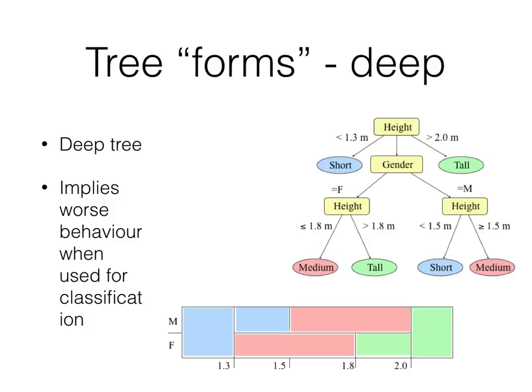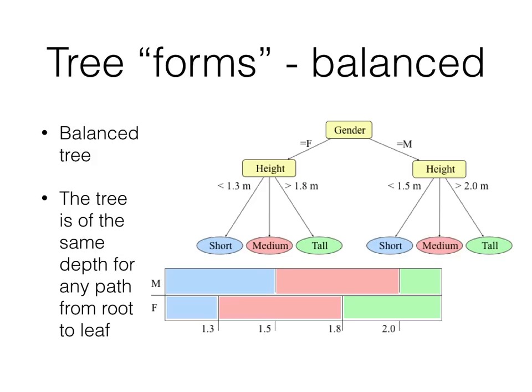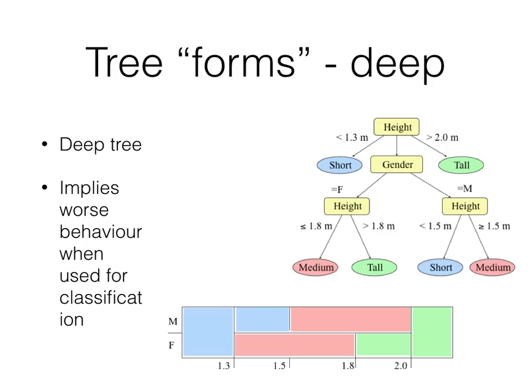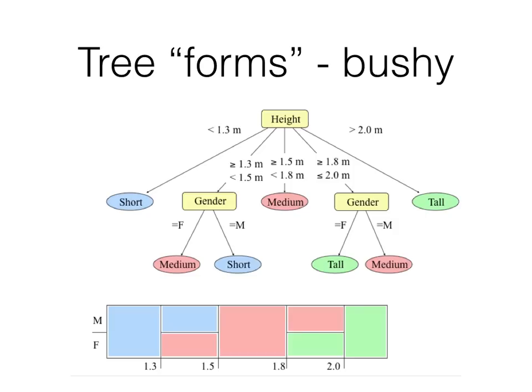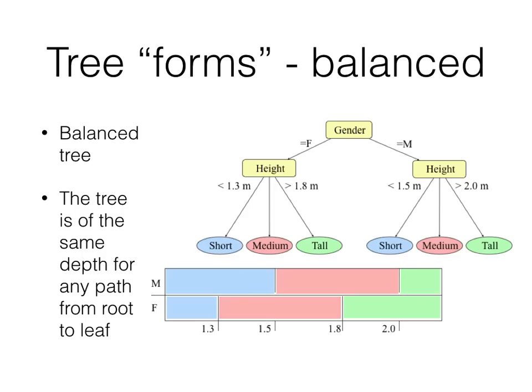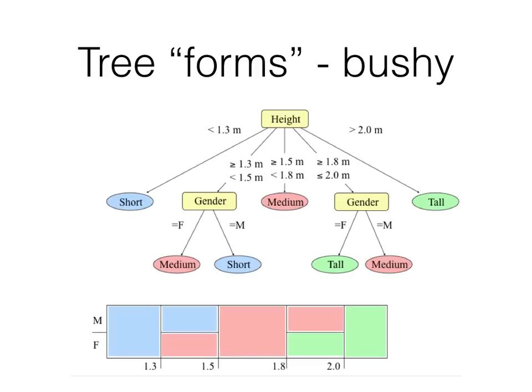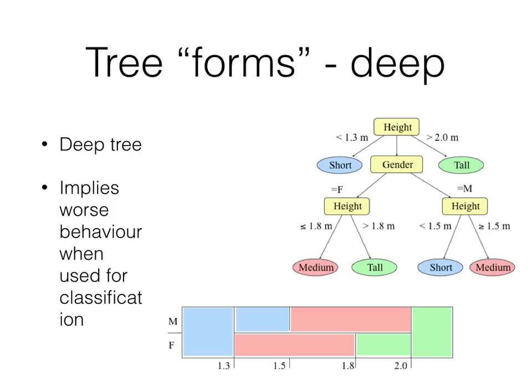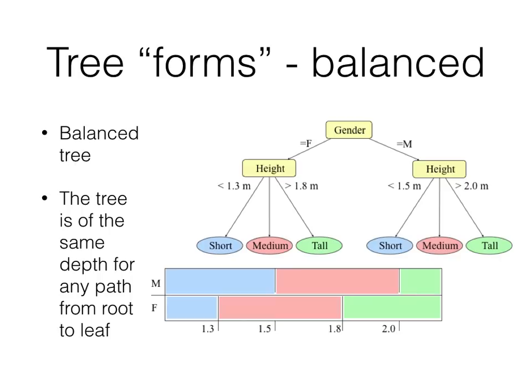This shows the difference between a balanced tree, a deep tree where one area is deeper than the other, and a bushy tree where it's very wide. You can see the different partitionings of the space. The deep and bushy trees don't tend to work quite as well, but the balanced tree works well.